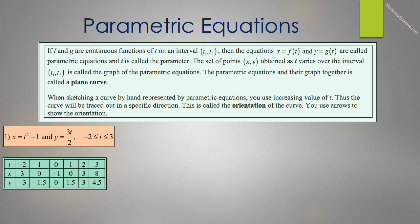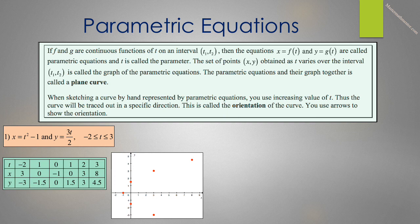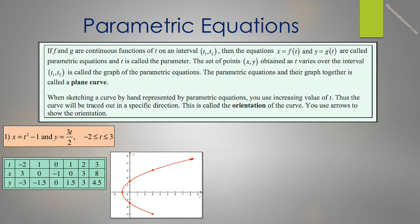Suppose we have the parametric equations x equals t squared minus 1 and y equals 3t over 2, where t runs from negative 2 to 3. We first make a table of values of t, x and y, with t as integers starting at negative 2 to 3. We then plot the points on the xy plane. Notice that the value of t is not visible. Since x of t and y of t are differentiable functions, we can assume that the plane curve generated by the parametric equations will also be differentiable. So we can connect the points with a curve, remembering to put an orientation arrow at the point 8, 4.5.